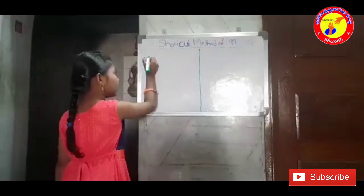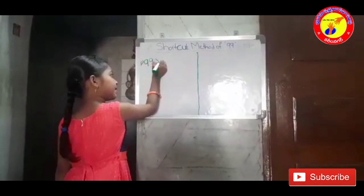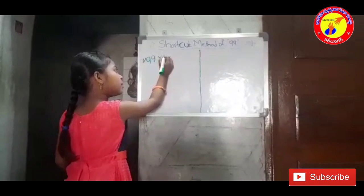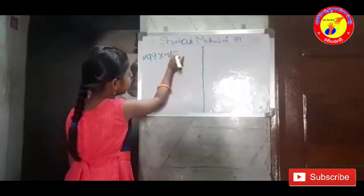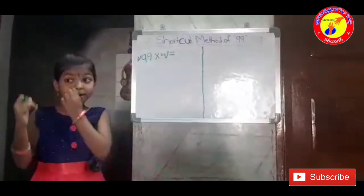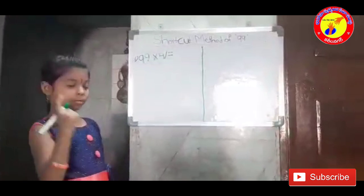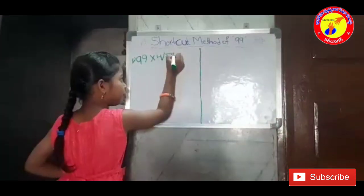First one: 99 into 41. In 41, subtract 1 — what number do you get? It is 40.